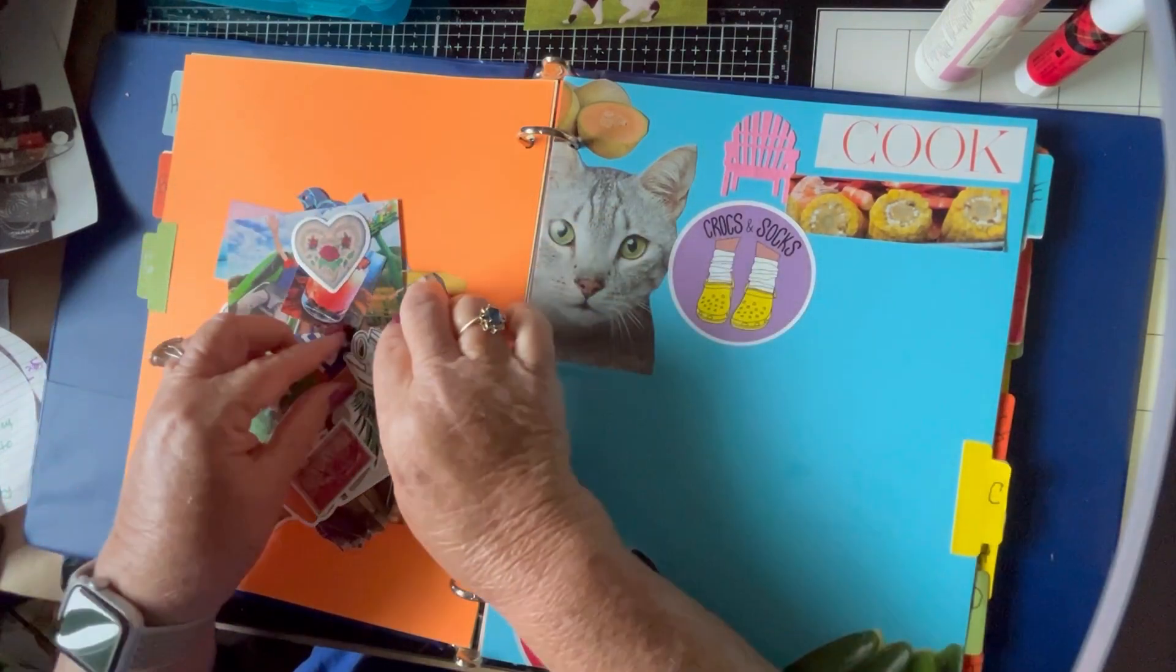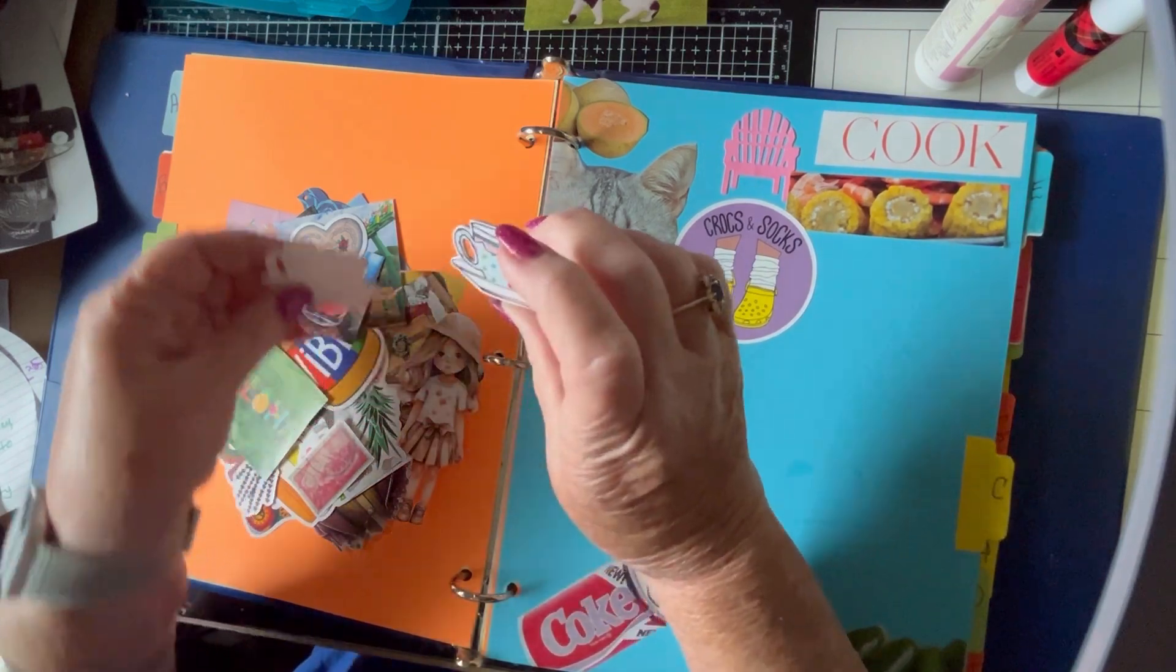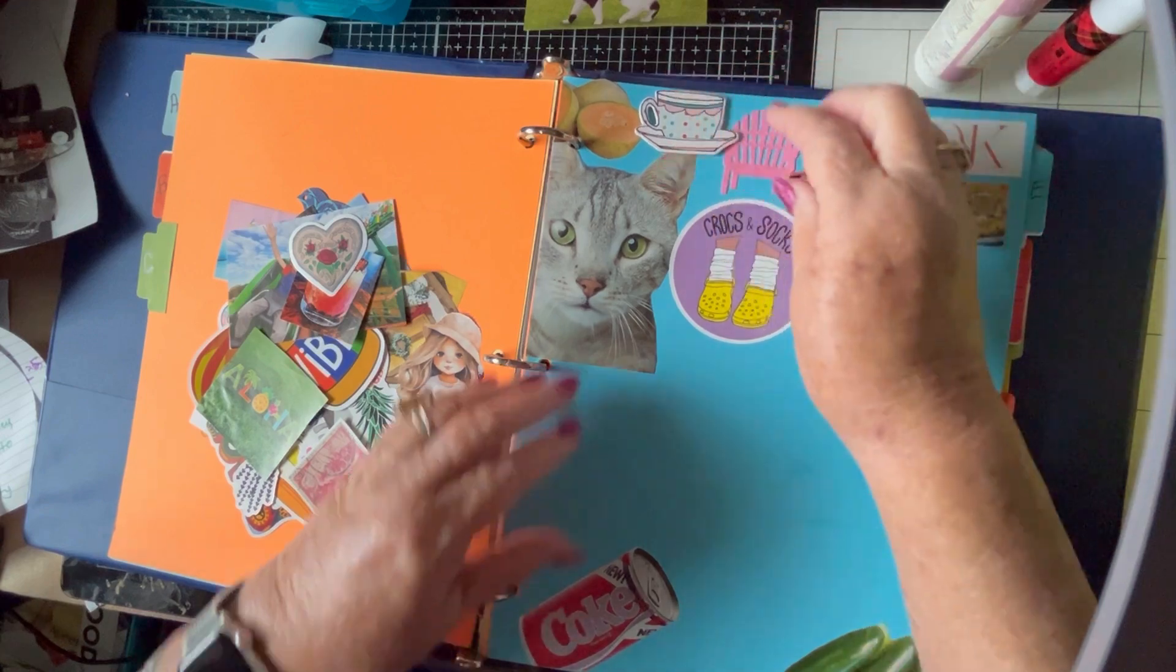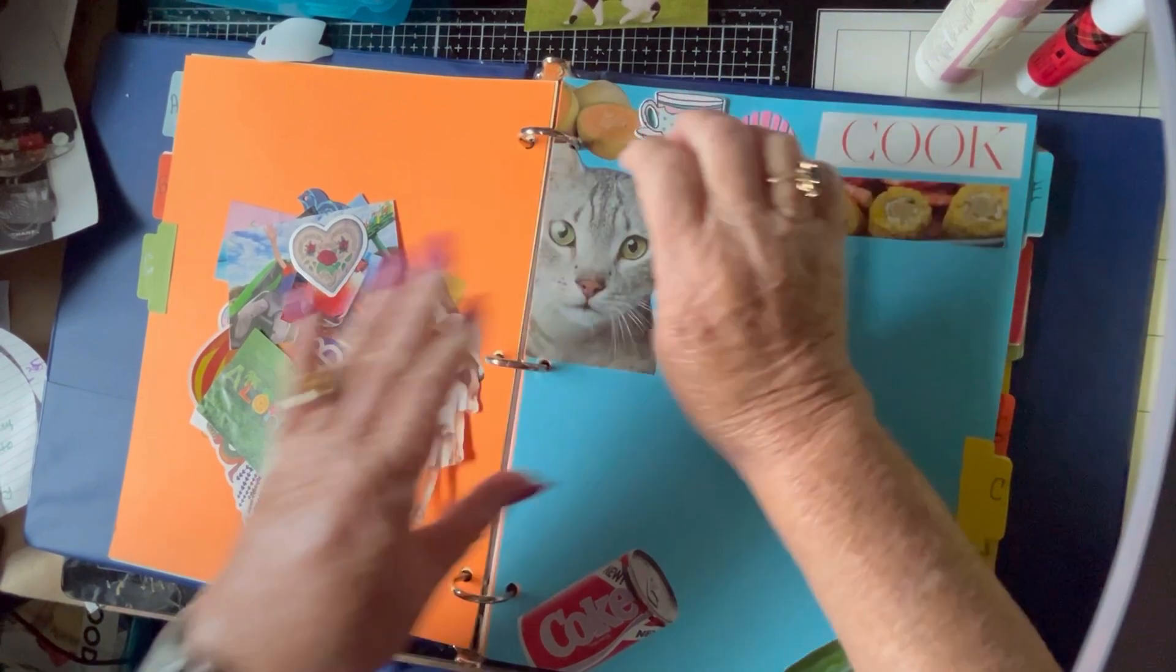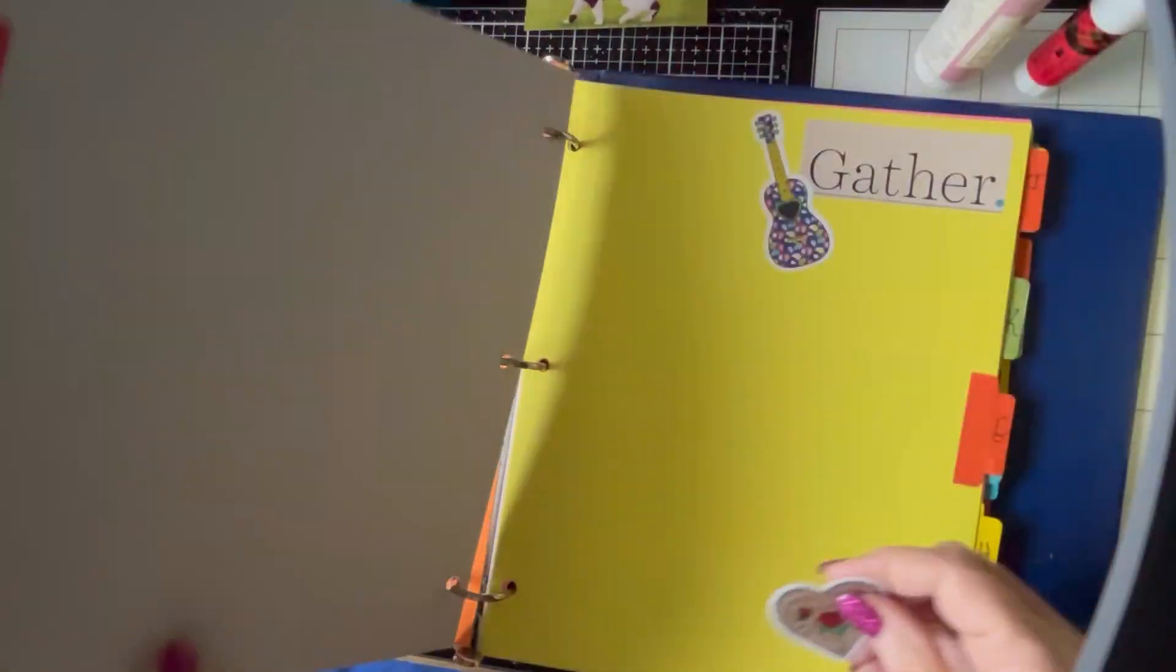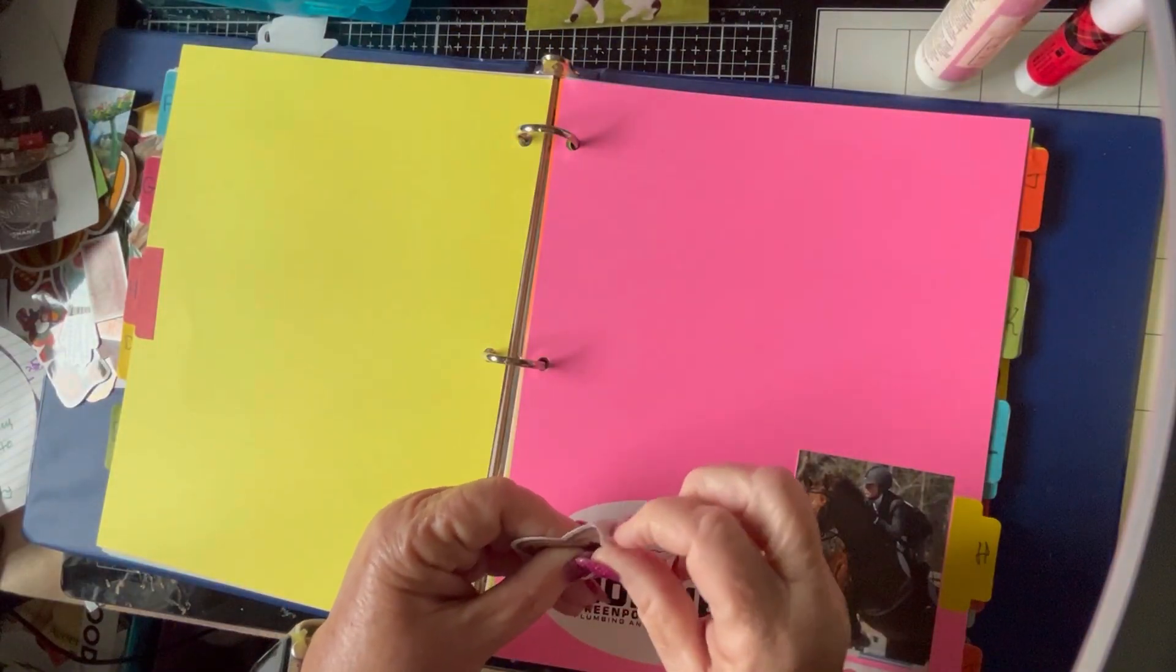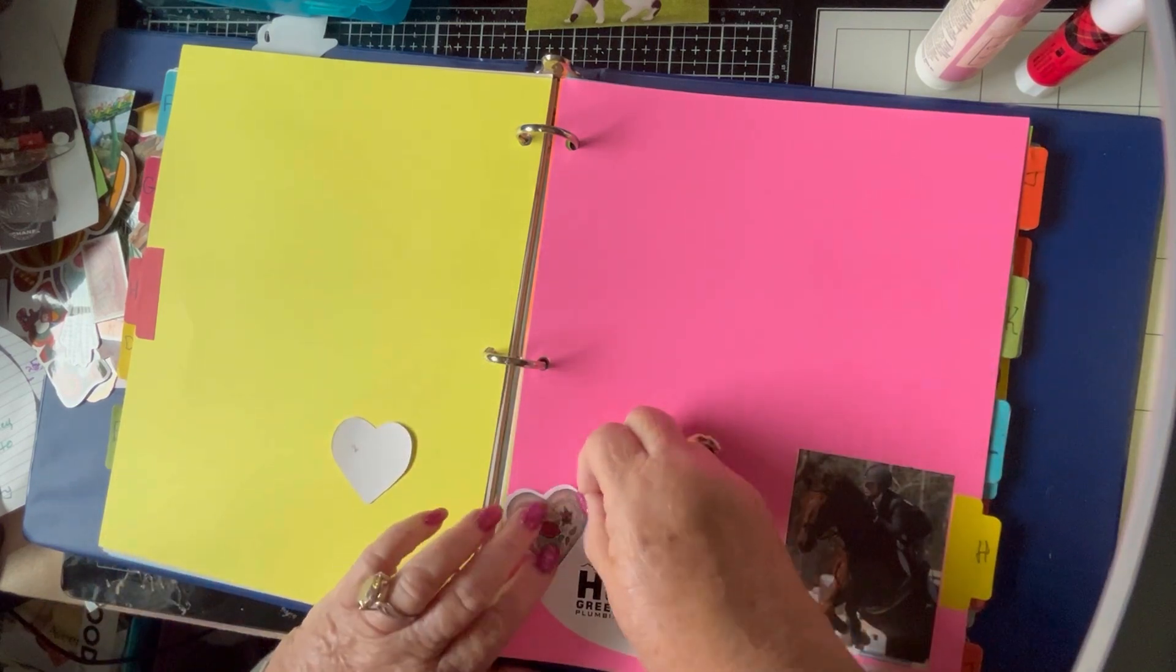So first of all, I have this cardboard sticker, and it's a cup, so I'm going to add it right to the C page. I'm starting to overlap a little bit. Next I have this heart sticker. I like this one a lot. And we'll go right over to the H page and add the heart.